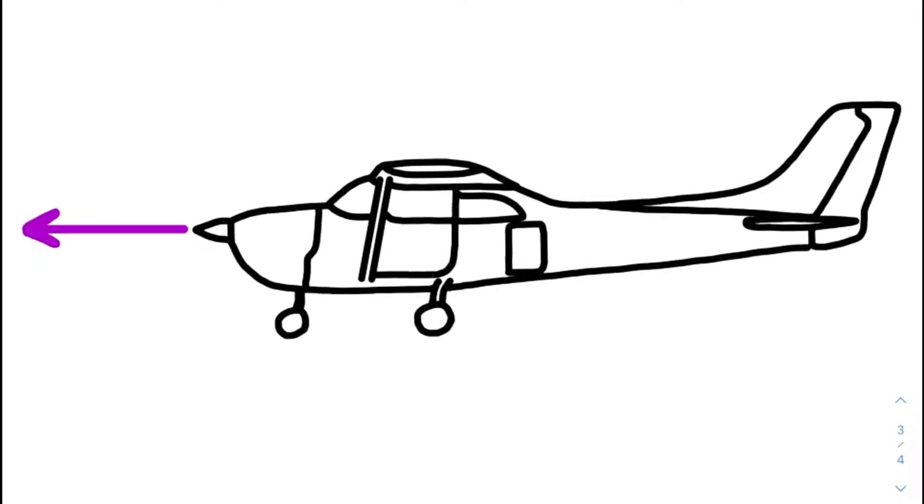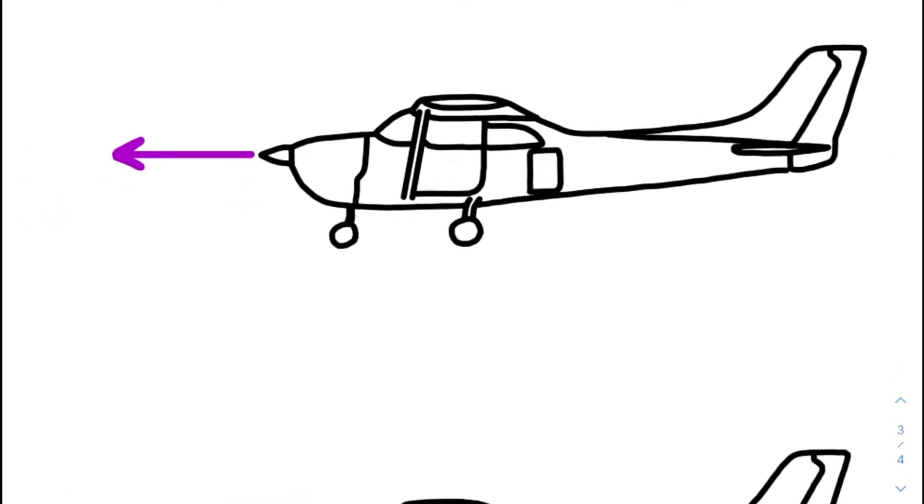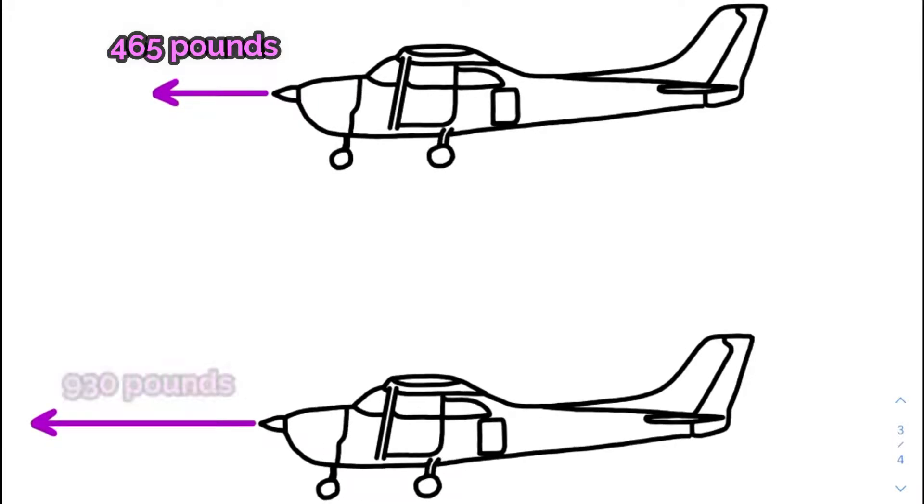This also works with forces. In a Shanghai Aircraft Design and Research Institute study, a Cessna 172 with a 150 horsepower engine produced about 465 pounds of thrust at full throttle while stationary. Just like with velocity, an engine producing 930 pounds of thrust would have a vector that is twice as long while positioned in the same direction.